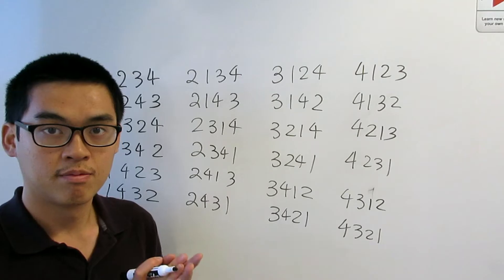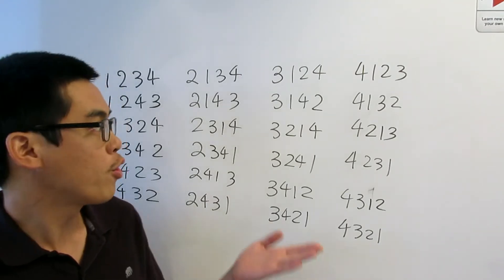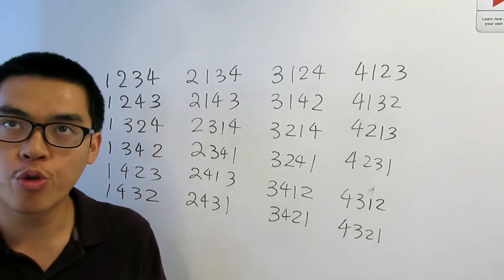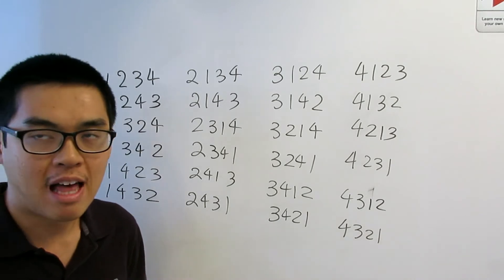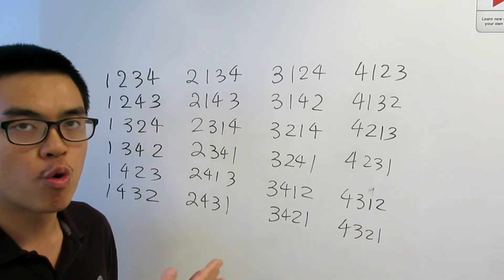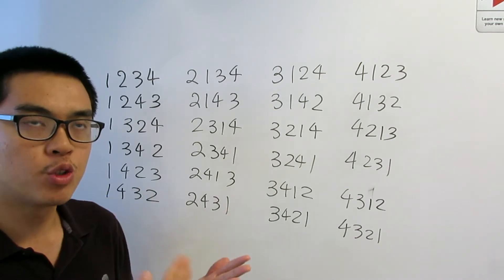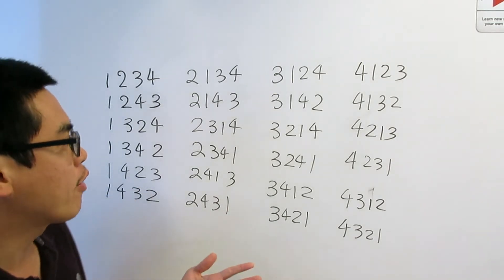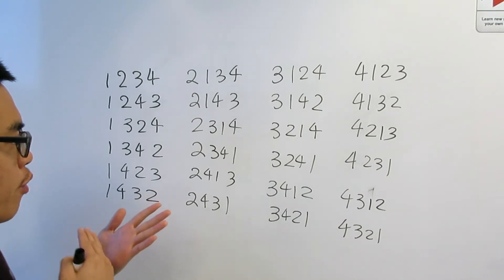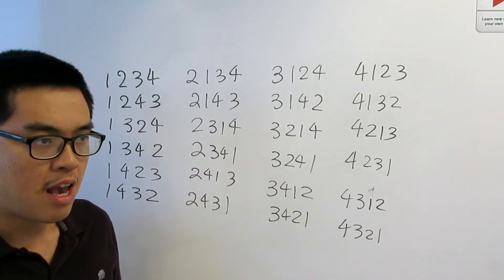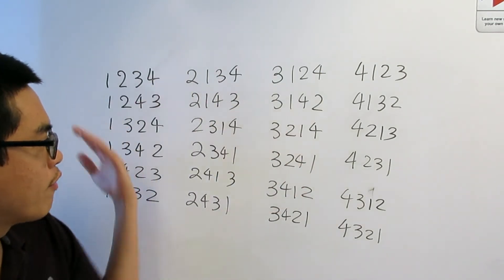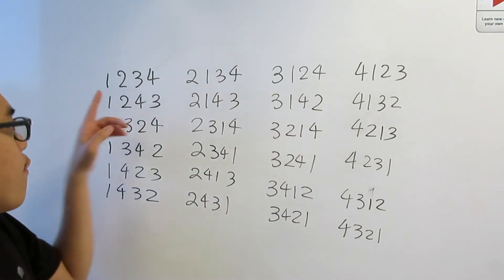And here they are — all the ways to rearrange four numbers. So if you have numbers one, two, three, four and you want to line them up, maybe you want three first, then two, then four, then one — you end up with three, two, four, one. That configuration should appear on this board, and indeed three, two, four, one is right here. Any arrangement you choose should appear as one of these 24 configurations.